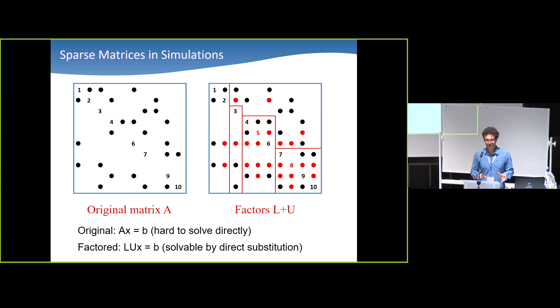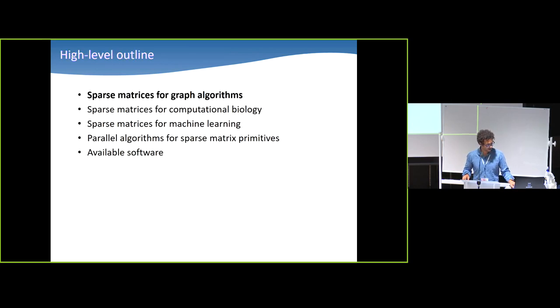But my research is actually the opposite direction, which is how can sparse matrices help graph algorithms, as opposed to how can graph theory help sparse matrix computations? So the high-level outline will be I'm going to spend quite a bit of time on graph algorithms first, and I'm going to go slow and tutorial-style. Hopefully you're going to be in the flow zone as opposed to the boredom zone.